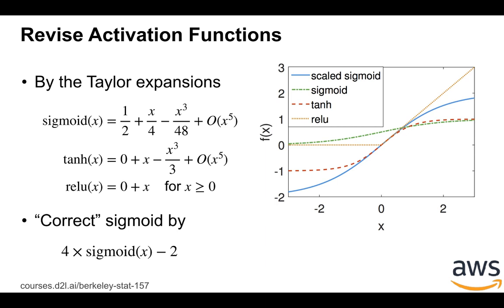Then for both tanh and relu are fine, but the problem is the sigmoid, because it's not close to identity function.